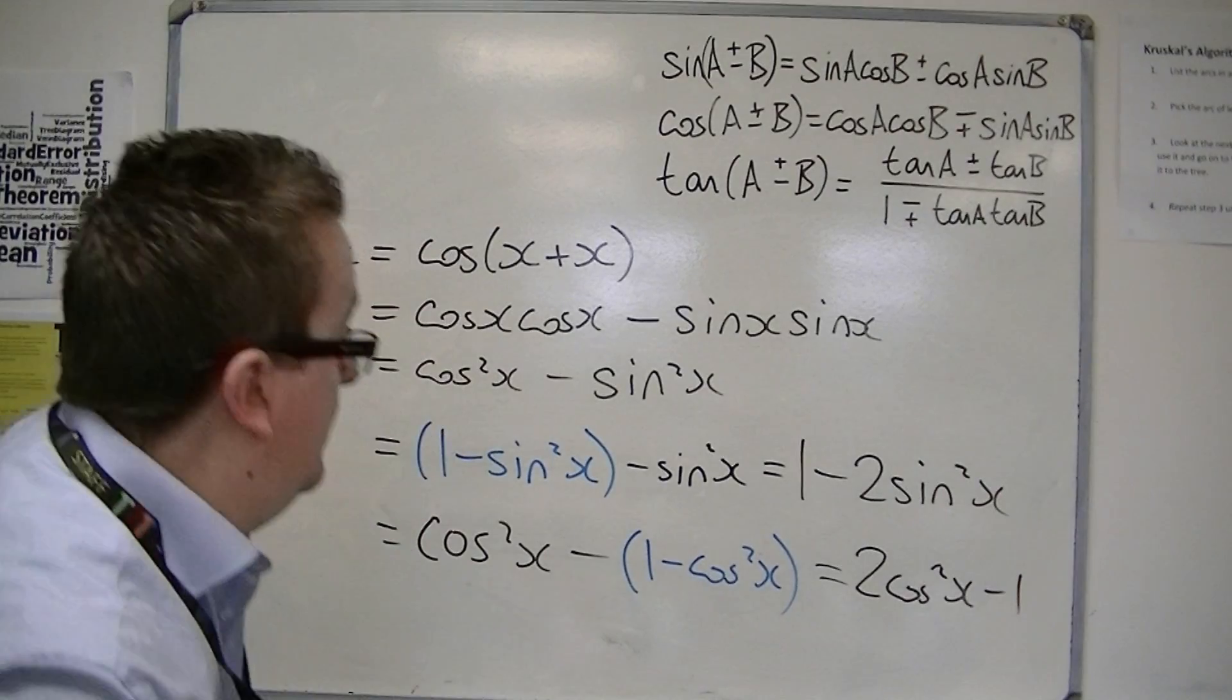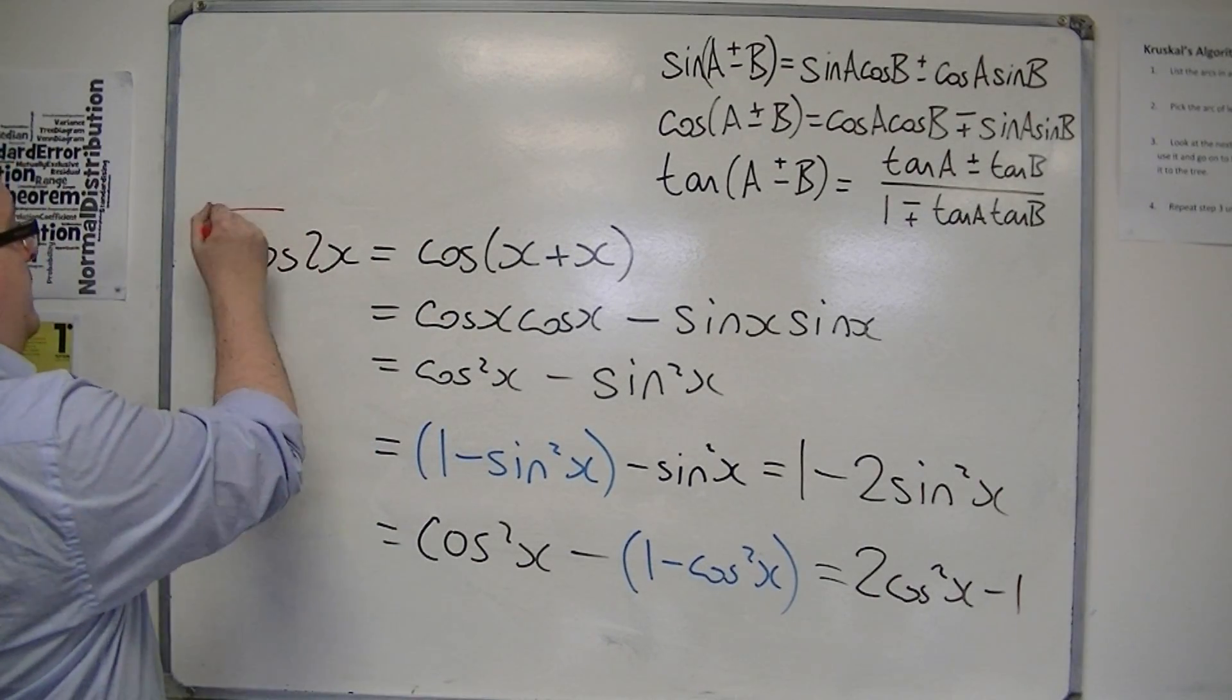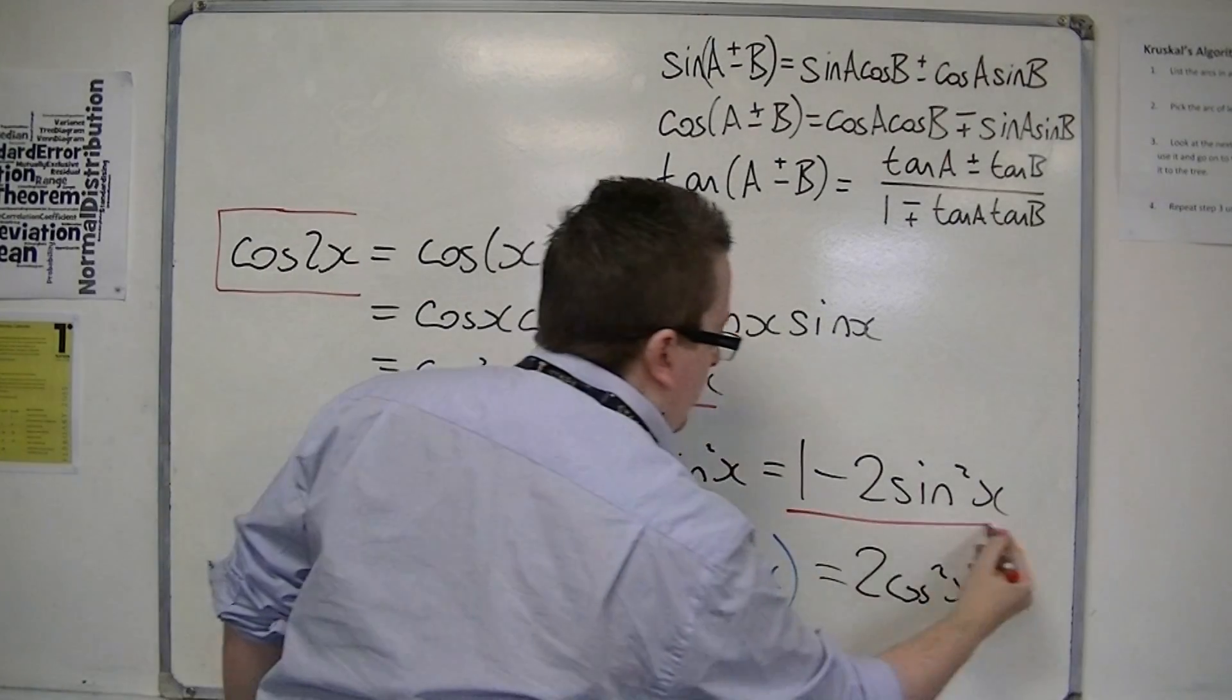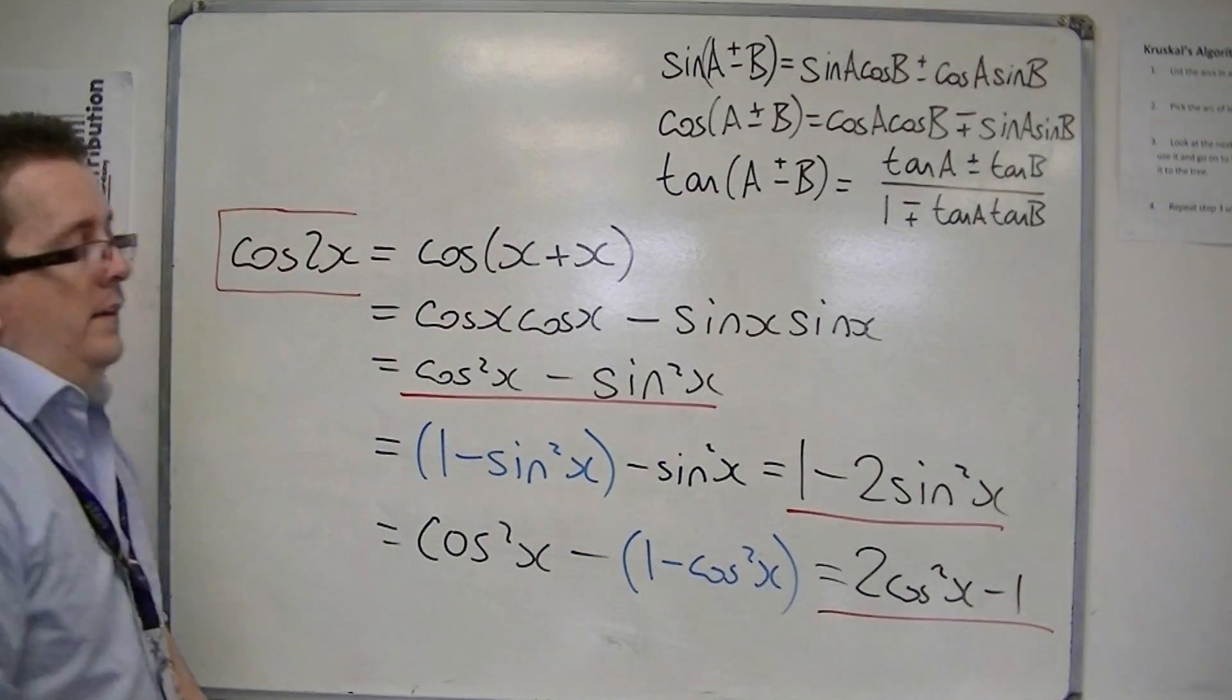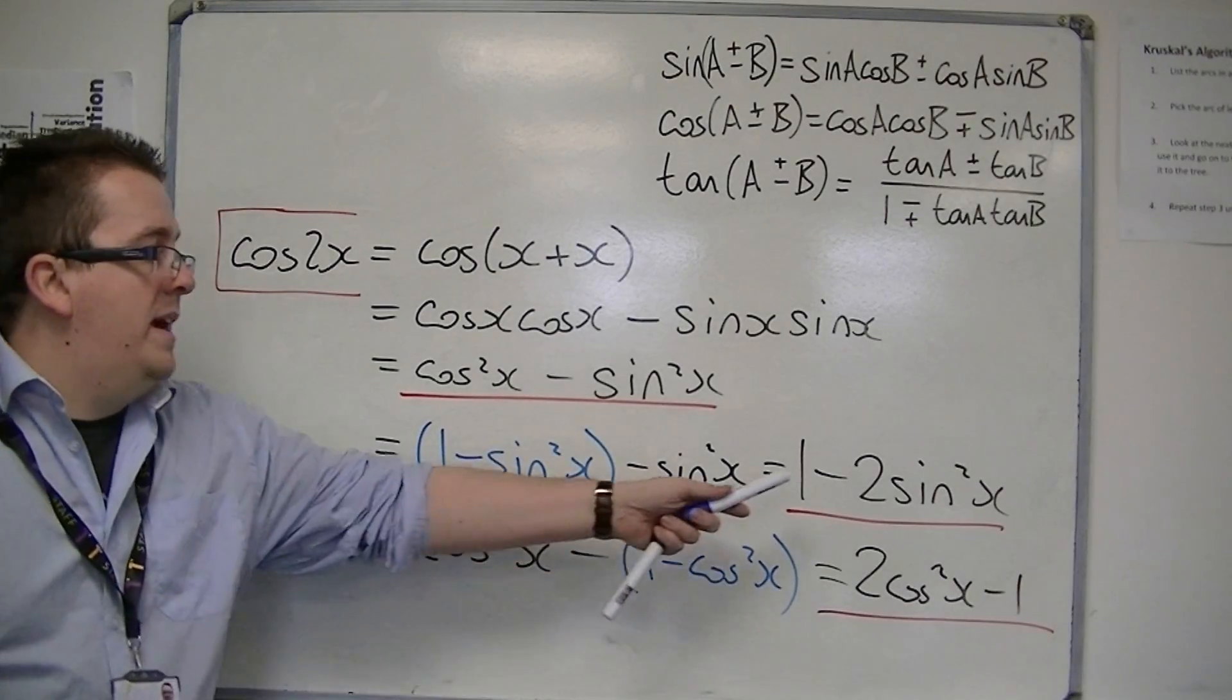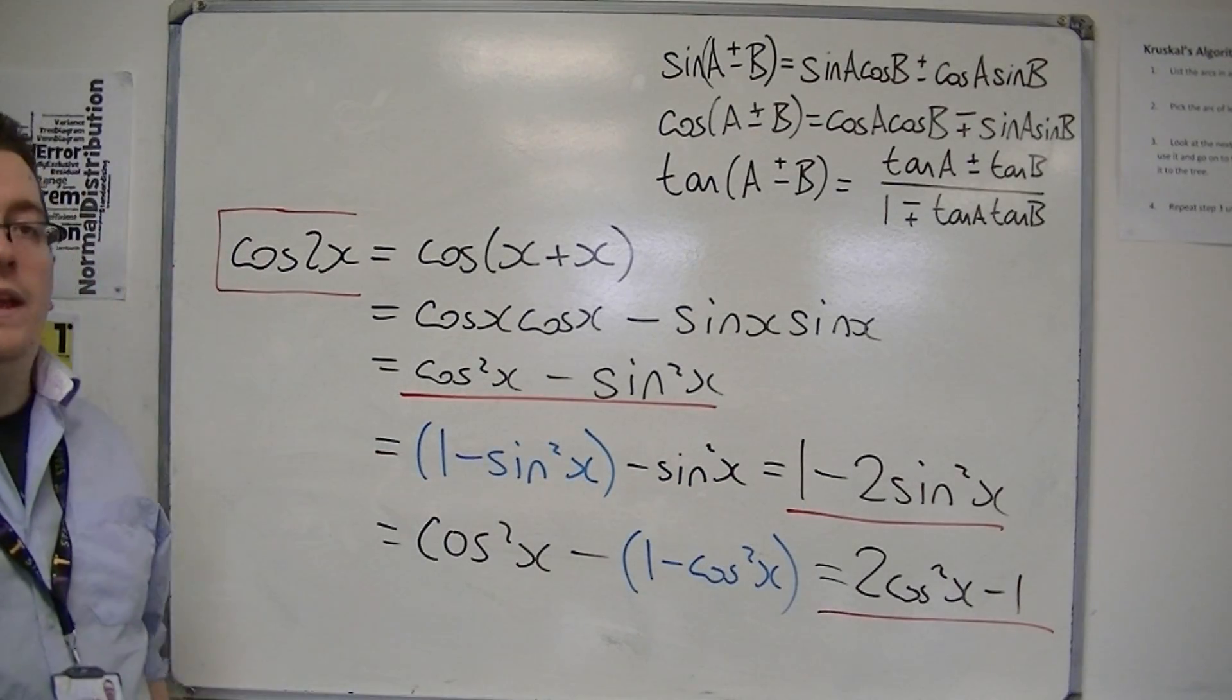So in actual fact, for cos 2x, you have three variations. Okay, all of which are going to be useful for us. But mainly these two, but that one has its uses as well.